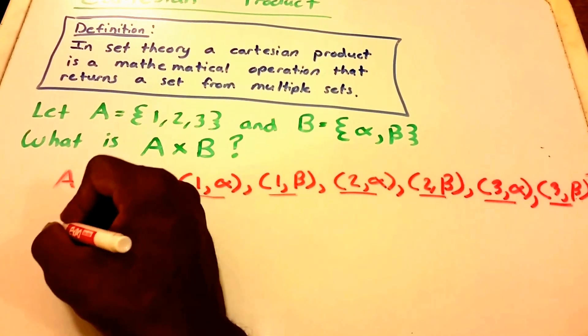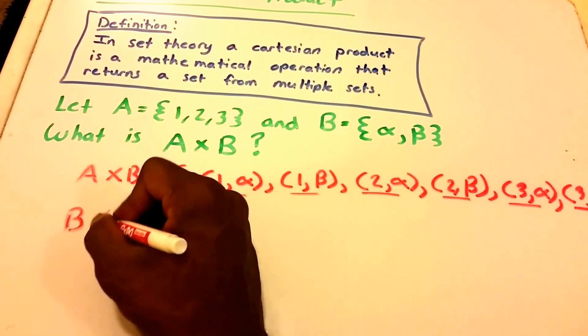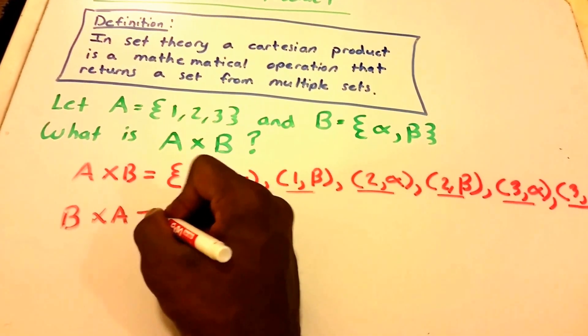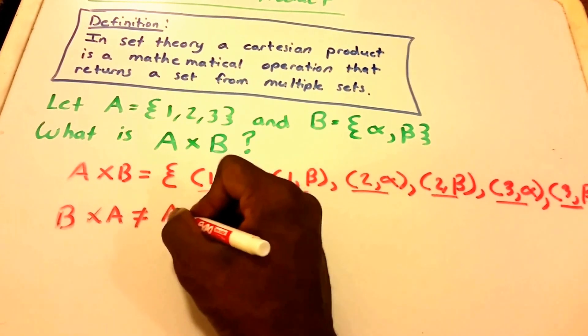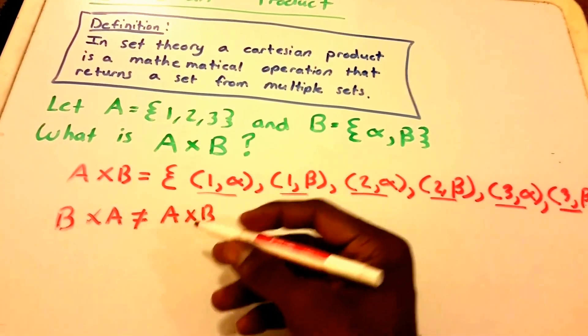Also, I want to put a little note that the Cartesian product of B and A is not equal to the Cartesian product of A and B. And I'm going to show you that.